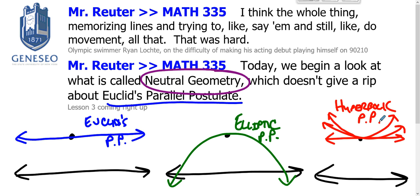What we are going to build is a neutral geometry, and that neutral geometry does not take a particular position on the parallel postulates. So that's what we mean when we talk about neutral geometry.